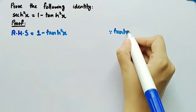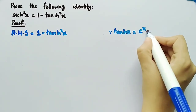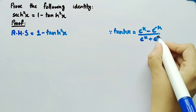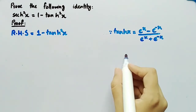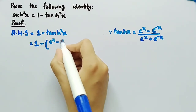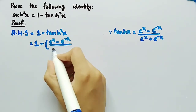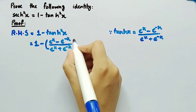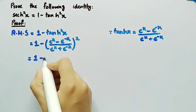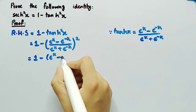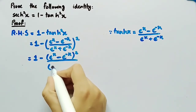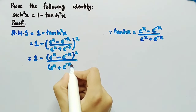We know that tanh x is equal to (eˣ minus e⁻ˣ) divided by (eˣ plus e⁻ˣ). By substituting its value, we get 1 minus (eˣ minus e⁻ˣ) divided by (eˣ plus e⁻ˣ), whole square. We can also write it as 1 minus (eˣ minus e⁻ˣ)² divided by (eˣ plus e⁻ˣ)².